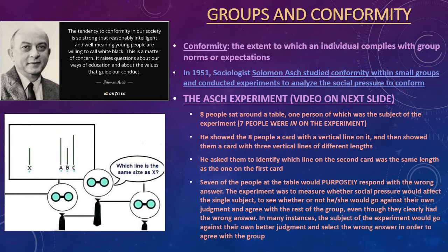Now we're going to think about groups, conformity, and peer pressure. Conformity is the extent to which an individual will comply with group norms or expectations. Back in the 1950s, sociologist Solomon Asch was very interested in peer pressure and conformity. He studied conformity within small groups and conducted experiments to analyze the social pressure to conform. In 1951, he performed the Asch experiment, in which he had eight people sit at a table. Only one of those people was the actual subject of the experiment; the other seven knew what was happening and were part of the setup.